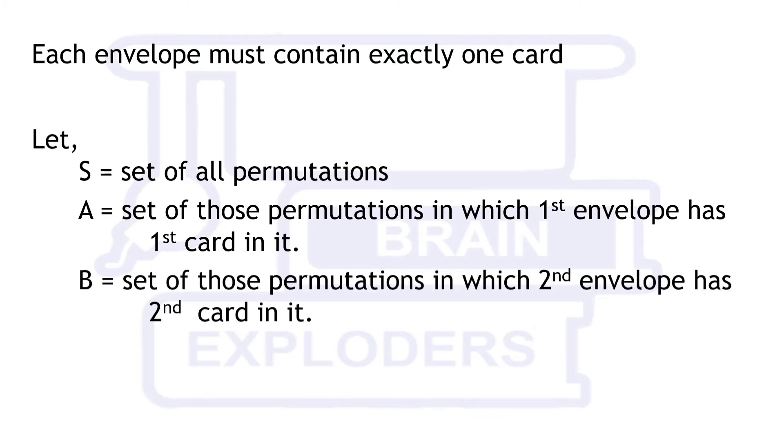B is the set of permutations in which second card is always present in the second envelope and rest cards may or may not be present in the envelope of the same number. Similarly, we have 5 more such sets.